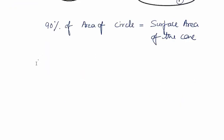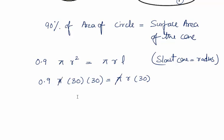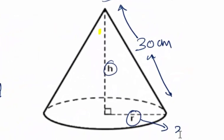Now, 90% of the area — that is 0.9 × π × r² — must be equal to π × r × l, where l is the slant height of the cone and r is the radius of the cone. So 0.9 × π × 30 × 30 = π × r × 30, since the slant height equals the radius of the circle. The pi and 30 cancel out, giving r = 0.9 × 30 = 27 centimeters. So the radius of the cone is 27 centimeters.